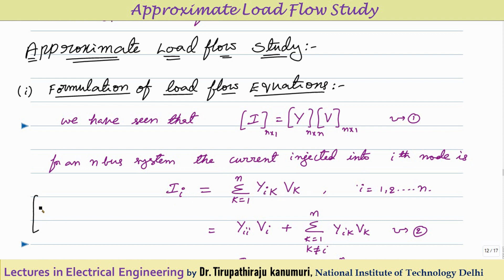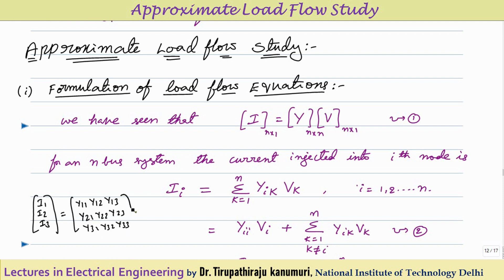Taking the case of a 3-bus system, I can write I1, I2, I3. We have the admittance matrix with elements Y11, Y12, Y13, Y21, Y22, Y23, Y31, Y32, Y33, multiplied by V1, V2, V3. For example, to calculate I2: I2 = Y21*V1 + Y22*V2 + Y23*V3.